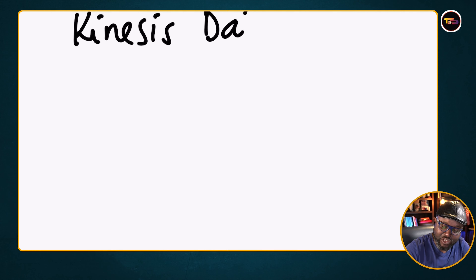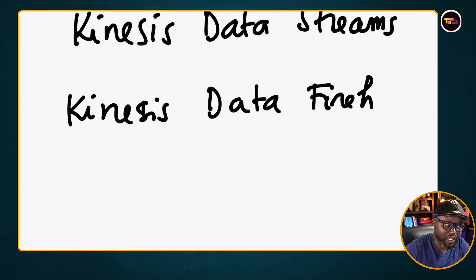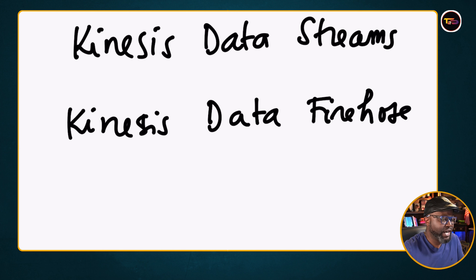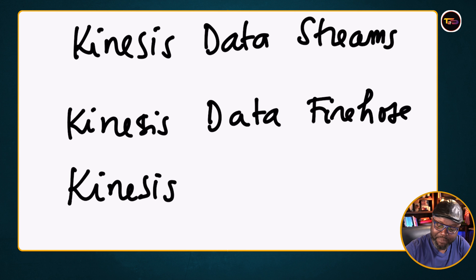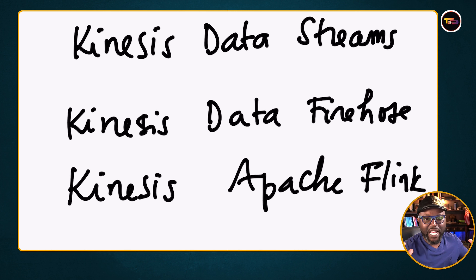AWS offers three components here. You have Kinesis Data Streams, then the next one is Kinesis Data Firehose — it's like channels flowing through — and lastly they used to call it Kinesis Analytics but now they use Apache Flink.